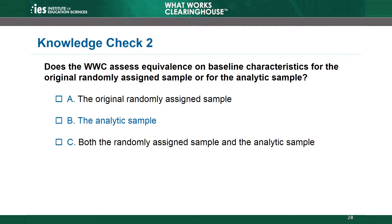The correct answer is B, the analytic sample. The analytic sample includes the intervention and comparison units used to estimate the effect of the intervention. We want to know that these analytic intervention and comparison groups are equivalent. Choices A and C are incorrect because the WWC does not calculate baseline equivalence on the original randomly assigned sample. Equivalence of the originally randomized groups wouldn't reflect possible bias introduced by changes to the sample from attrition. The WWC only requires a demonstration of equivalence on the analytic sample to show whether the two groups in the analysis were similar before the intervention occurred.